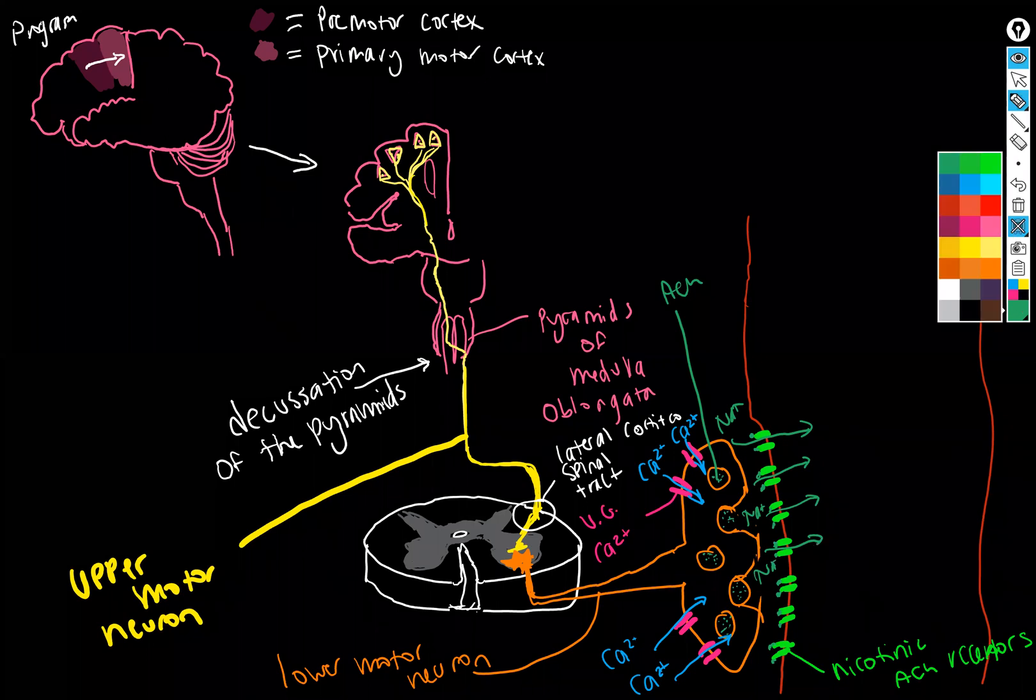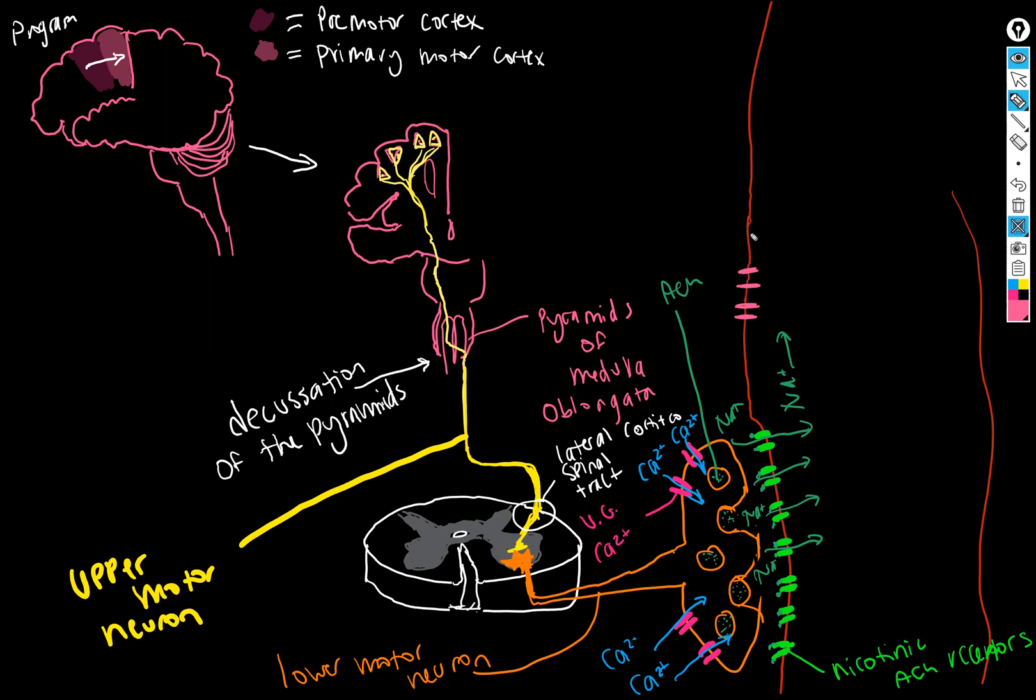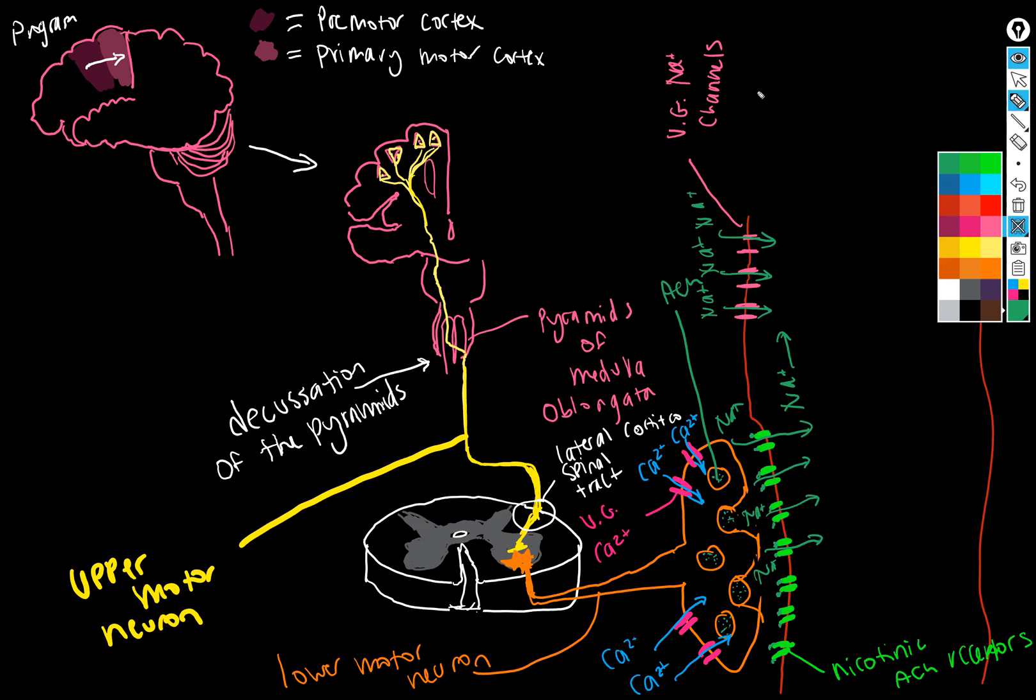Which is going to - I didn't give myself enough room here - open voltage-gated sodium channels and cause an action potential in the sarcolemma. So the potential that's formed at the neuromuscular junction is a graded potential. The potential that results in the sarcolemma from that is an action potential. And then that is going to rush down a T-tubule, which is what I've drawn here.